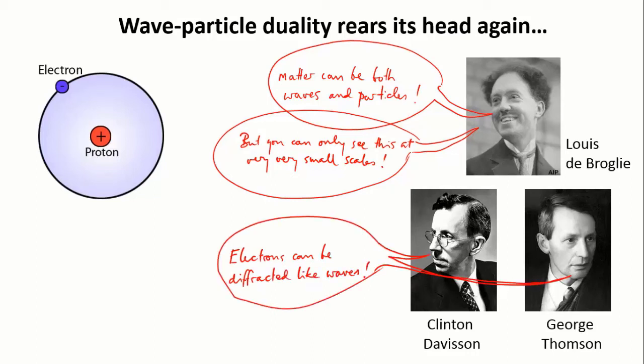Now, there's a beautiful symmetry in George Thompson being part of this discovery. George's father was J.J. Thompson, who had discovered the electron as a particle and came up with the plum pudding model. George, his son, subsequently showed that the electron was also a wave, thus completing the picture.